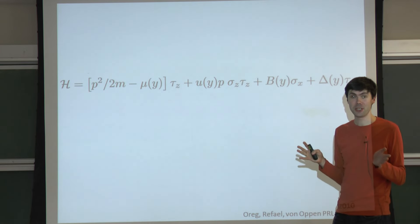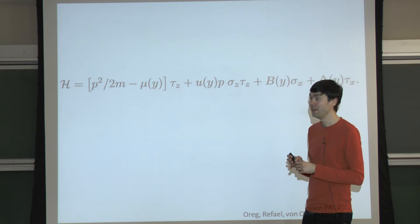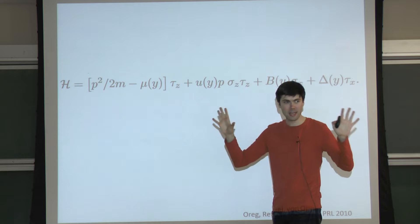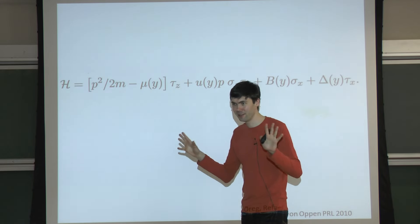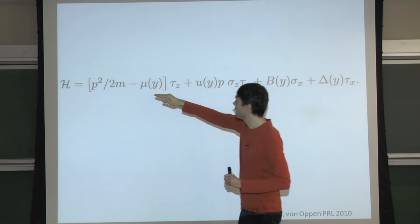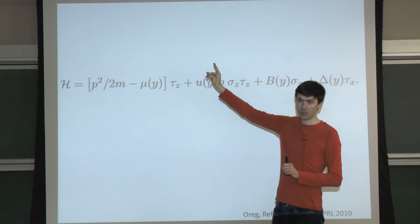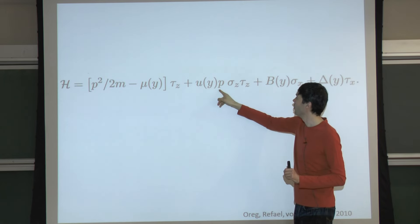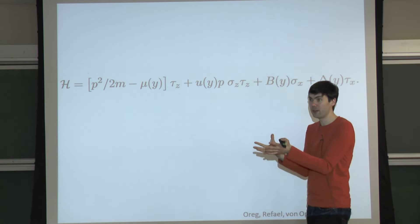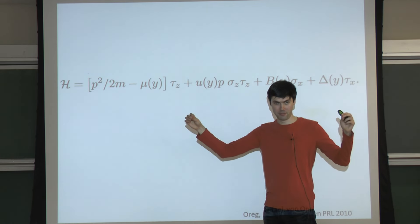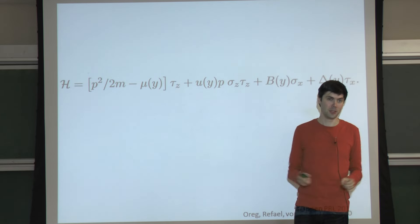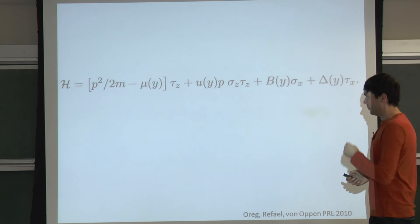This Hamiltonian is really simple - it is a single-particle problem with four terms, just like the recipe: kinetic energy and chemical potential for a one-dimensional particle, spin-orbit interaction (momentum times spin), Zeeman field, and superconductivity. That's it. You put these four things together, solve the Schrödinger equation for the one-dimensional system, and you get two bound states at the ends of the system which are Majorana fermions. The concept is a little mind-bending, but it is not mysterious.